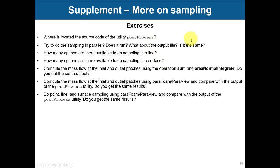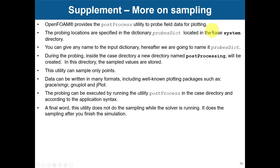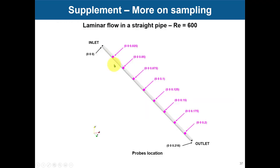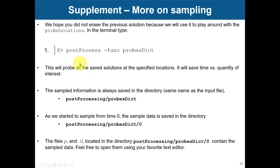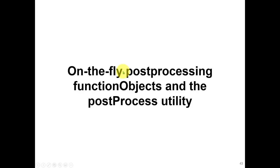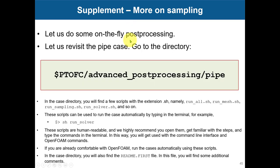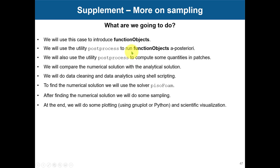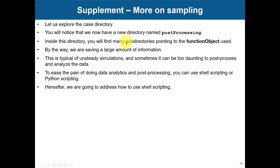So here you have some exercises — you are invited to try to solve them. If you have questions during the Q&A session, we can address that. And there is more here: more sampling on points, pretty much the same as before but with some more advanced options. Then we have also a little bit more on on-the-fly sampling. These are the typical function objects, still in the same case, just to show you more advanced options — you can run the case.